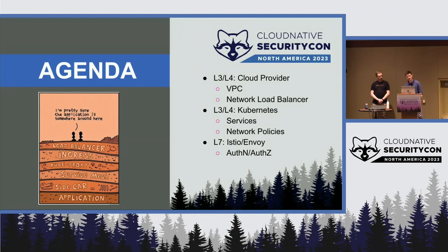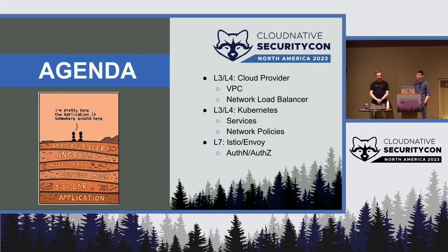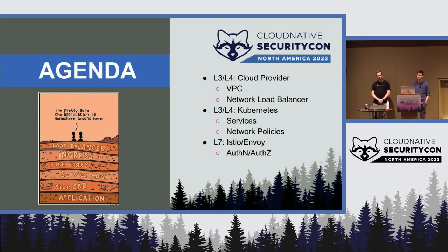Our goal today is to tell a generic story and go in detail into each of the layers you deal with when managing the network of such a cloud deployment. It can be confusing because you can configure networking policies at the cloud provider level, on your VPC, on Kubernetes, and on Istio. We want to explore what you can do at each of those layers, keeping things as generic as possible rather than tied specifically to Splunk.